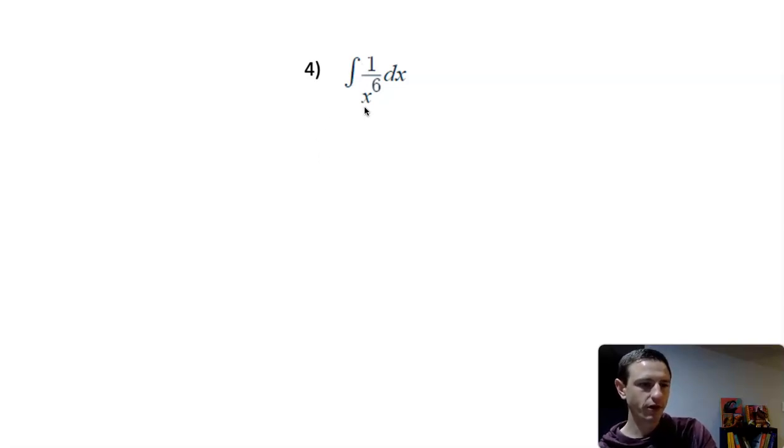Here, we want to integrate 1 over x to the 6th dx. So, 1 over x to the 6th. We have to deal with this. How do we go about doing this?